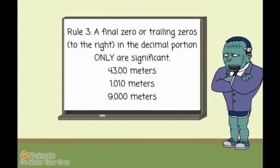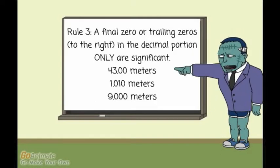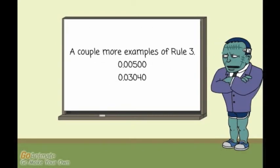Rule 3: Only the final zero or trailing zeros to the right in the decimal portion are significant. Each number has a measure of length to four significant figures. A couple more examples of Rule 3: the first number has only three significant digits with two trailing zeros; the second number has four significant digits with a trailing zero and a zero between two non-zeros.